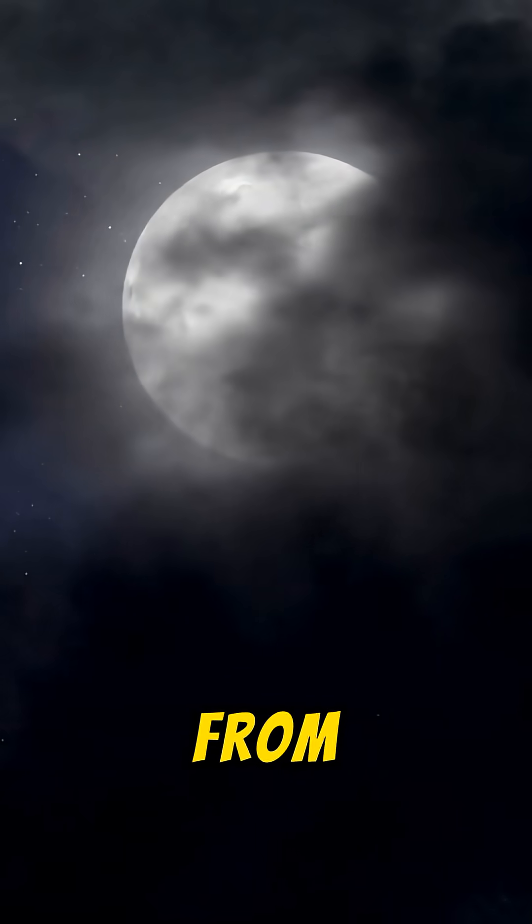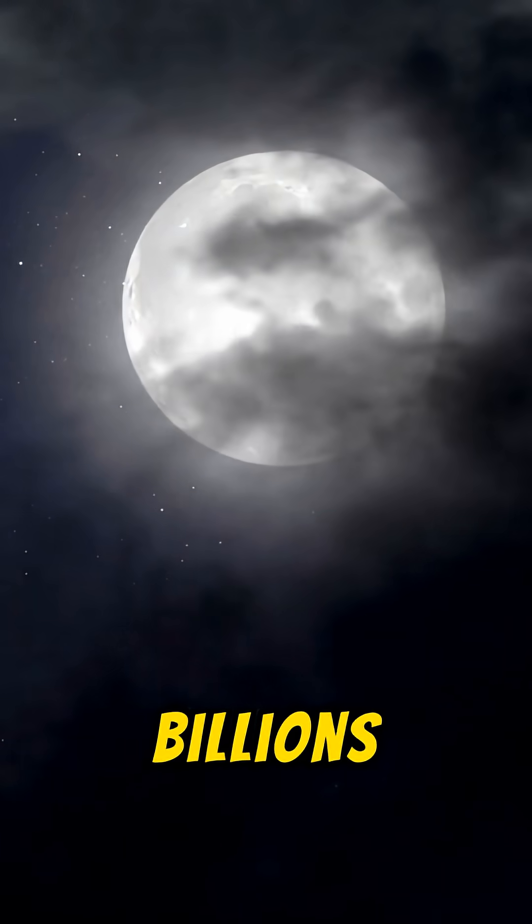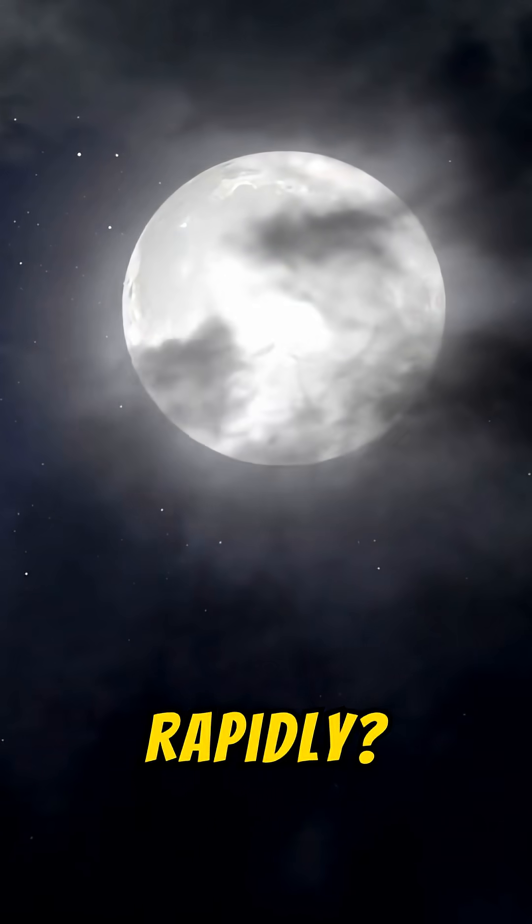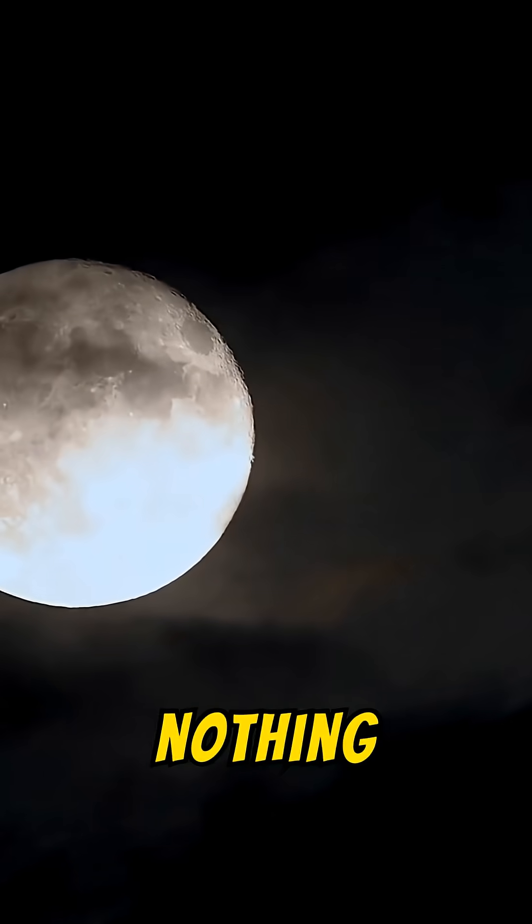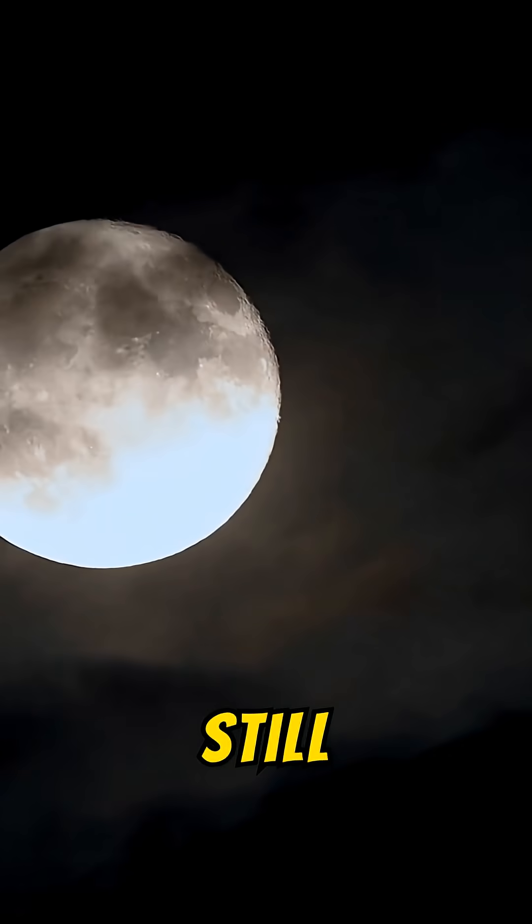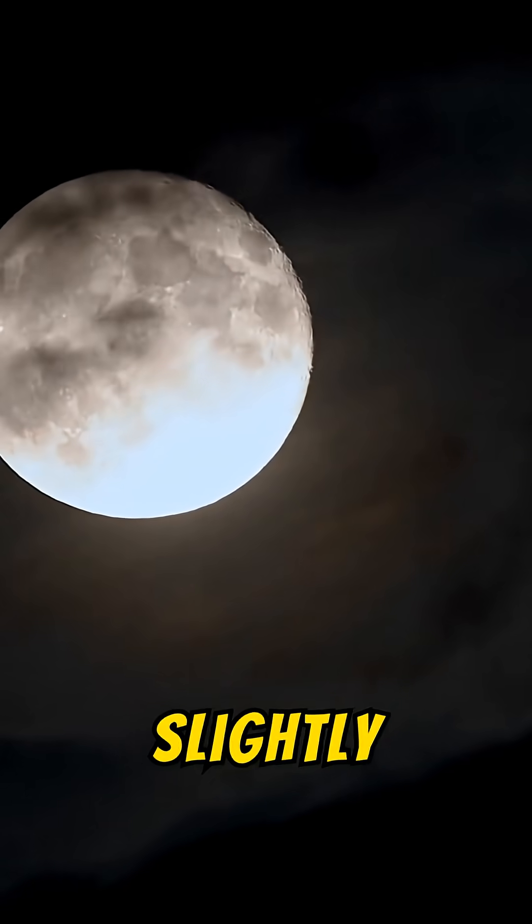What if the moon suddenly began drifting away from Earth, not slowly over billions of years, but rapidly? At first, nothing would feel wrong. The moon would still rise and set, and nights would look familiar, just slightly different.